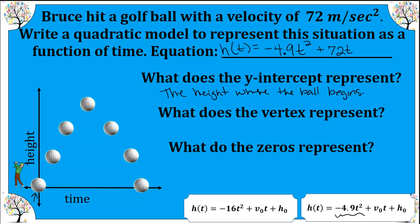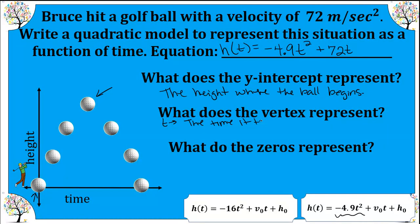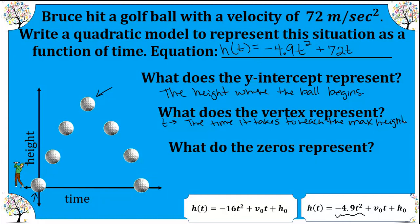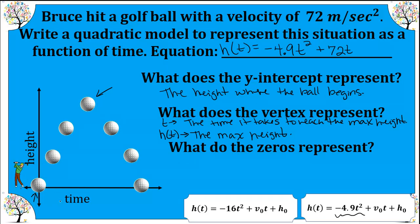At zero seconds, the ball is zero meters high. The vertex represents, first of all, the time in seconds it takes to reach the maximum height — that's the t-value of the vertex. The height value of the vertex is the actual maximum height the golf ball reaches.